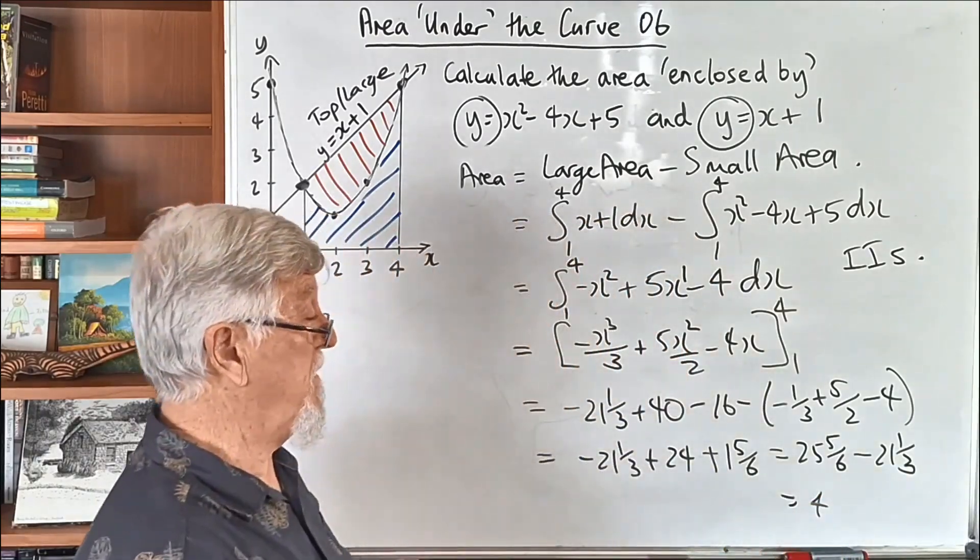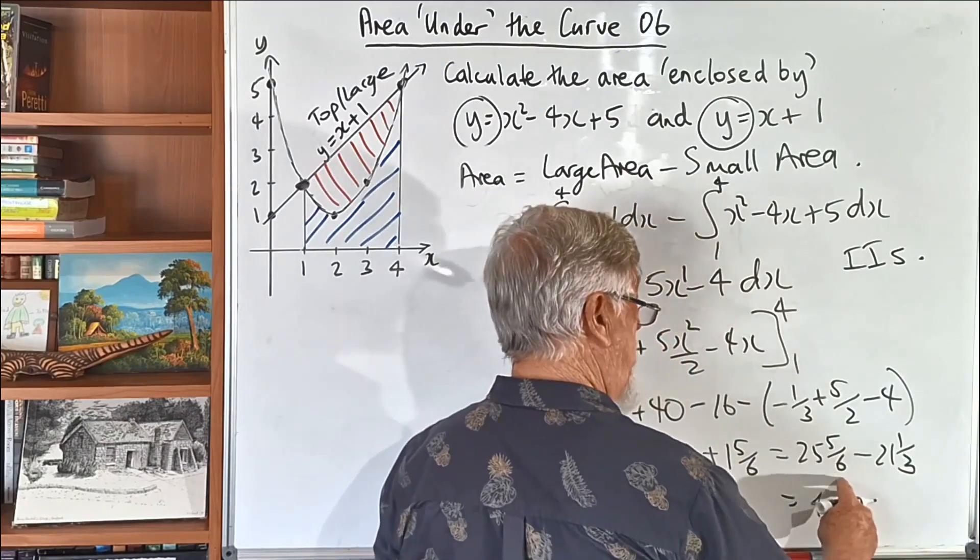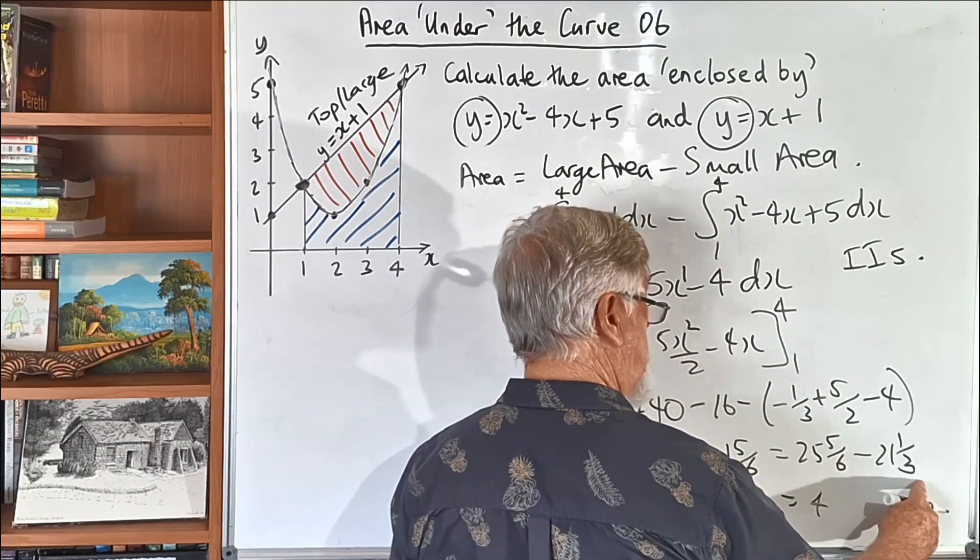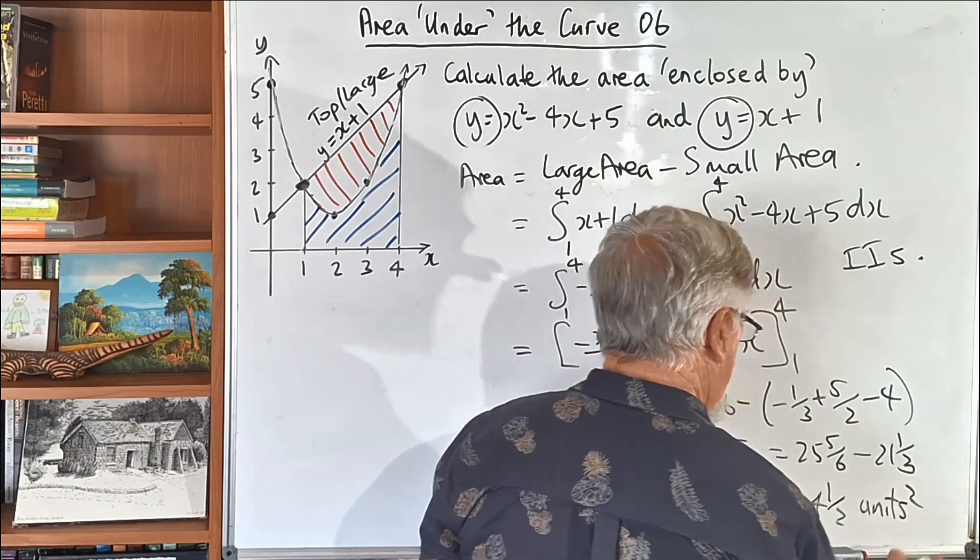you can get yucky calculators by the way like this. Now, 5 sixths take 2 sixths is 3 sixths, 5 sixths takes 2 sixths is 3 sixths, which is a half, and again we've got our 4 and a half unit squared.